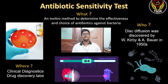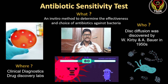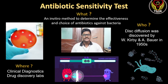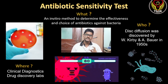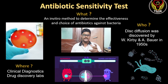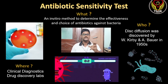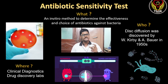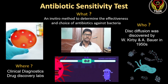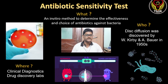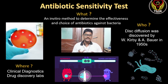In this video we are going to look at the antibiotic sensitivity test, or AST in short. It is an in vitro method to determine the effectiveness and choice of antibiotics against a bacteria. If there is any bacterial infection we use antibiotics as treatment, and to choose which antibiotic is effective and to determine the dosage, we use this antibiotic sensitivity test.